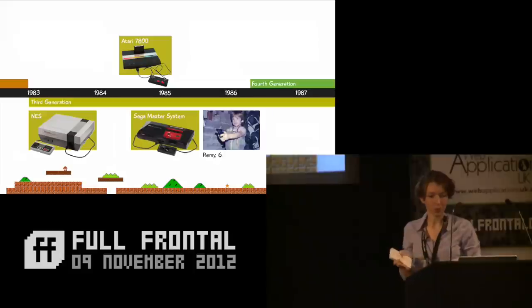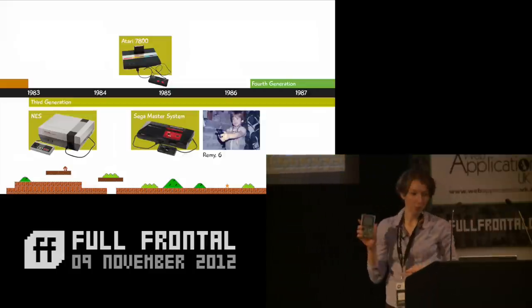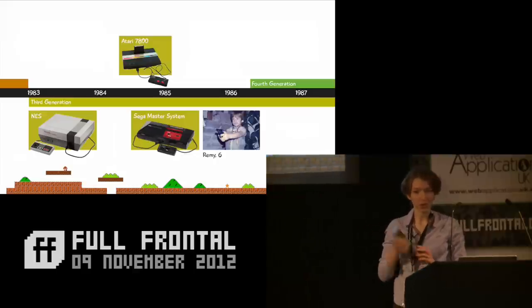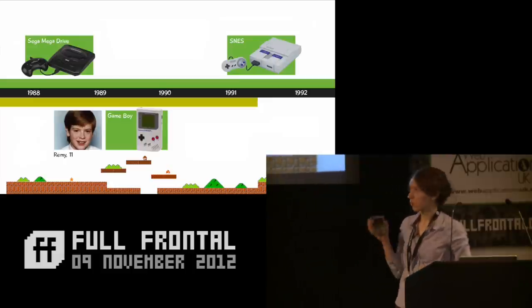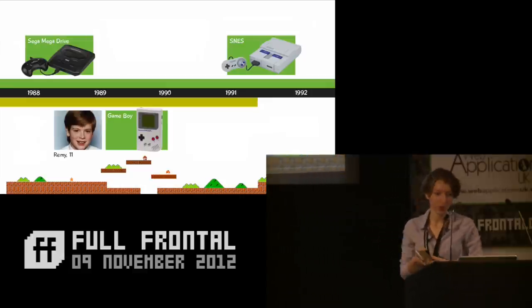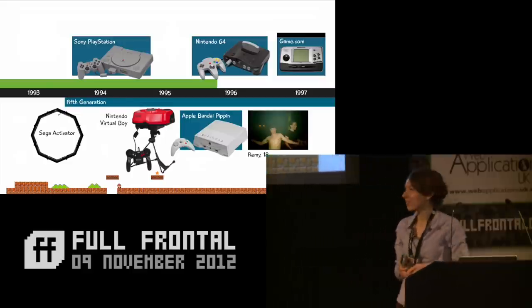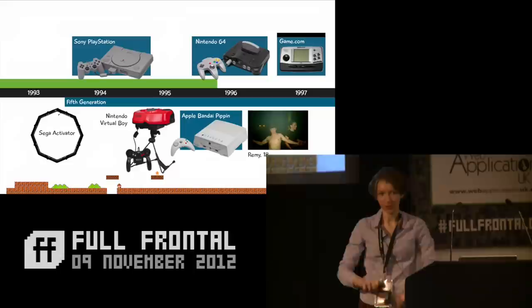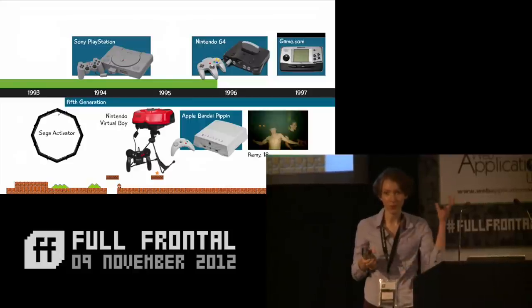The fourth generation was called the 16-bit era, with higher resolution sprites and more colours. In 1989, the first Nintendo Game Boy launched — the first major handheld console — going through iterations including the Game Boy Color in 1998 and the Game Boy Advance. In 1993, the Sega Activator came out — a peripheral for the Sega Mega Drive ranked the third worst game peripheral ever by IGN. You place it on the floor, stand in the middle, and move your arms. But they hadn't tested it in rooms with light fittings or ceiling fans.